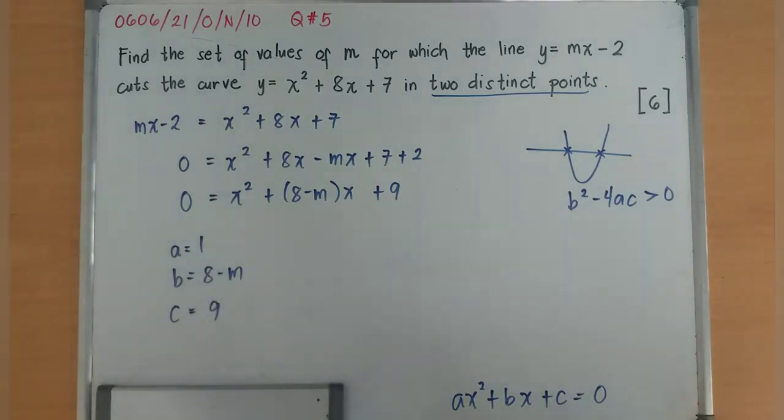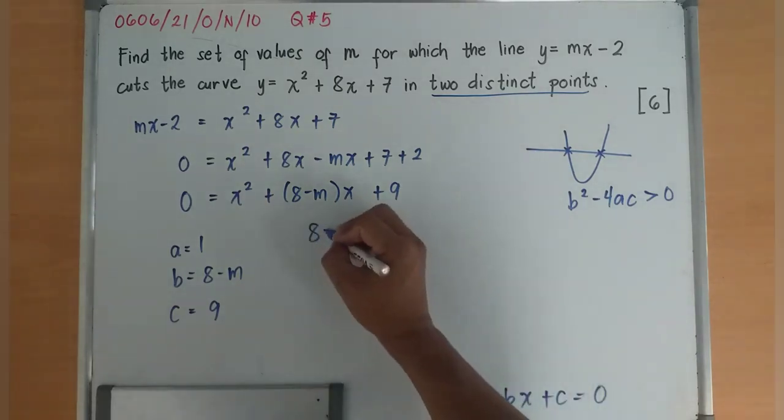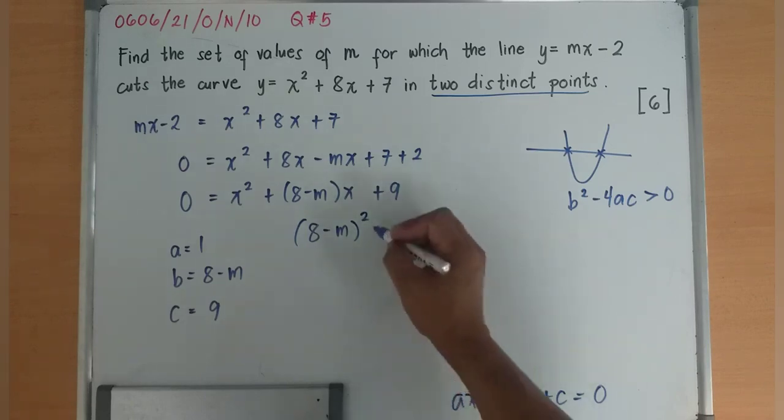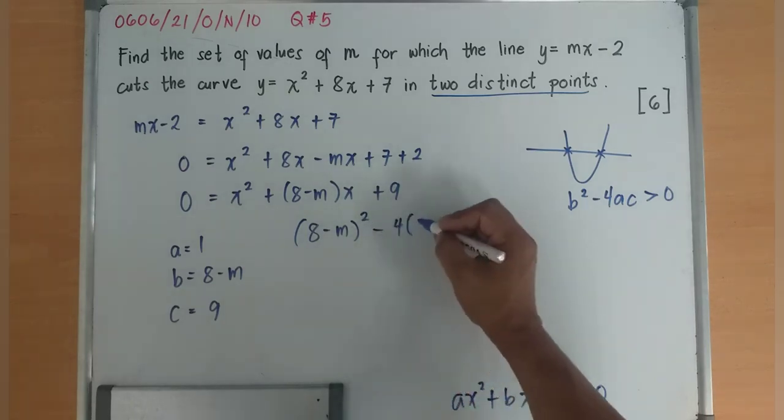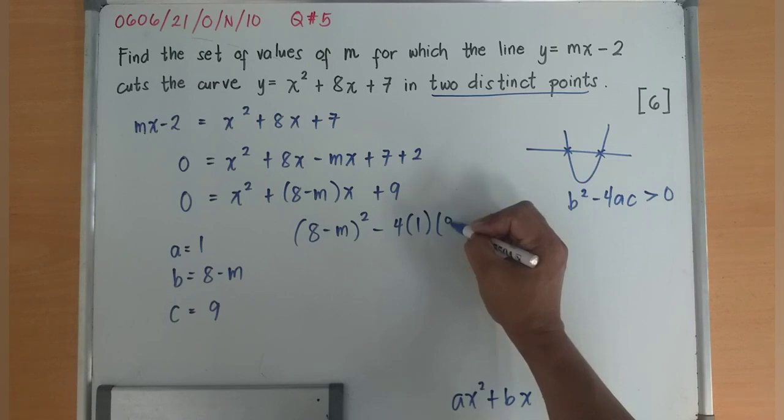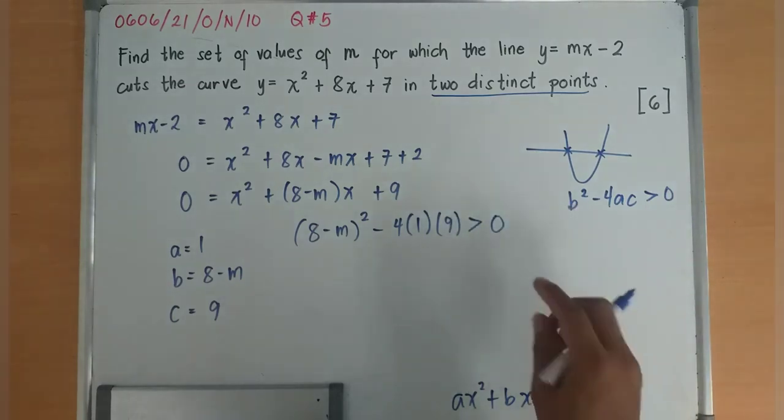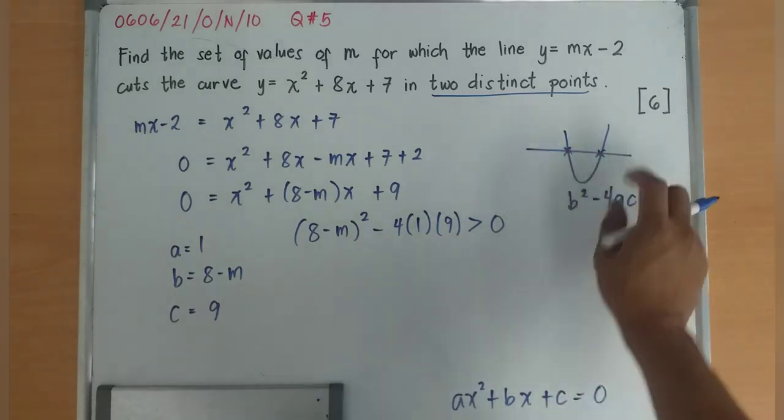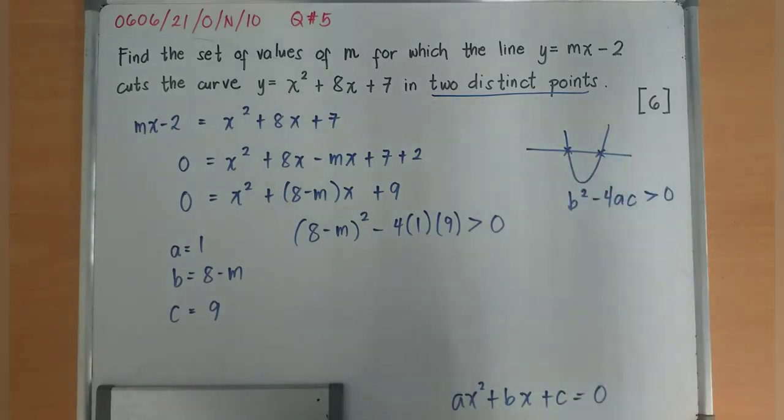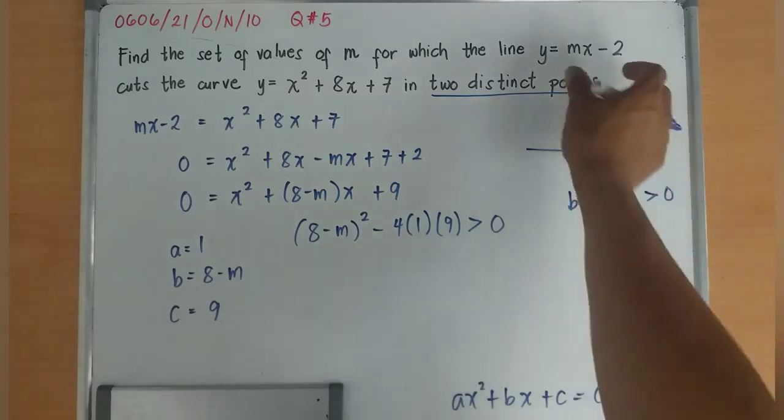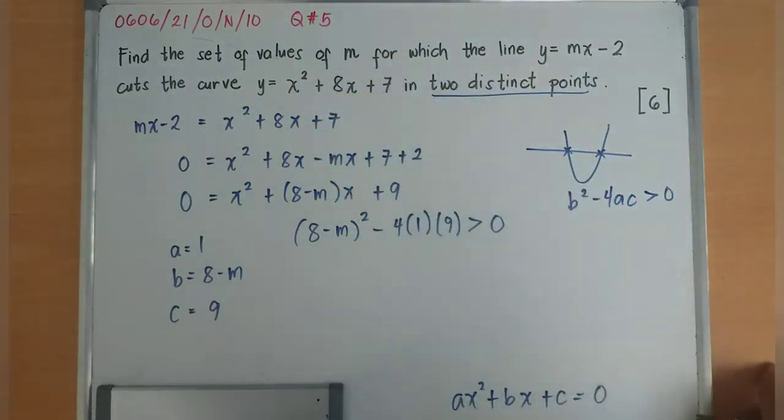Let's apply this one. I have now b is (8 - m)² minus 4 times a is 1, c is 9, greater than 0. Again, why did I put greater than 0? Because there are two distinct intersection points between the two lines.